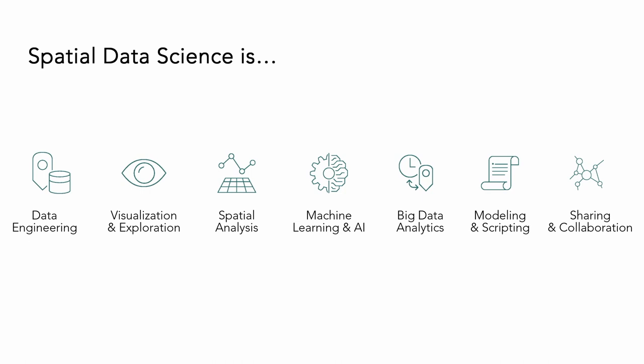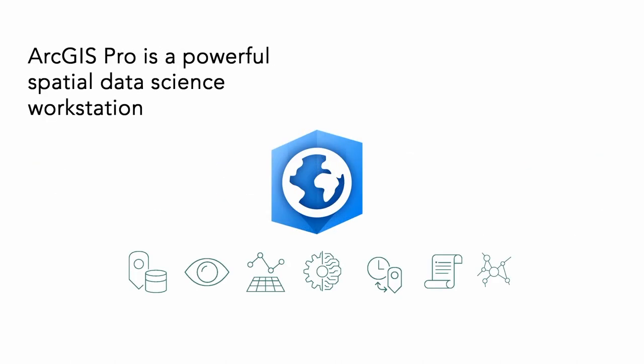Finally, sharing and collaboration — probably the most important part of this process. It doesn't matter how great your analysis is if no one's using it. This is where we take advantage of all parts of the platform to share our analysis, maps, data, models, scripts, and tell stories using that analysis. Pro is a powerful spatial data science workstation — a key place where all of these things really come together.